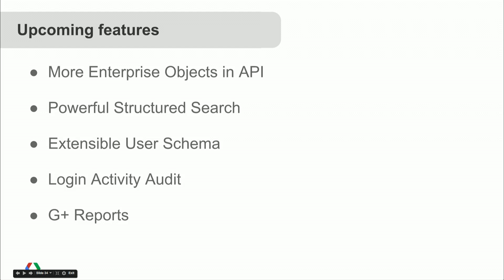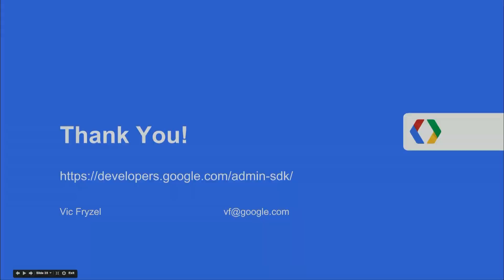Upcoming features include: more enterprise objects in the API, powerful structured search so you don't have to fetch full lists and manually search them yourself, an extensible user schema so you can set more properties per user without needing a separate data store, a login activity audit to detect user logins, and Google Plus reports to find out how your users are interacting with Google Plus.